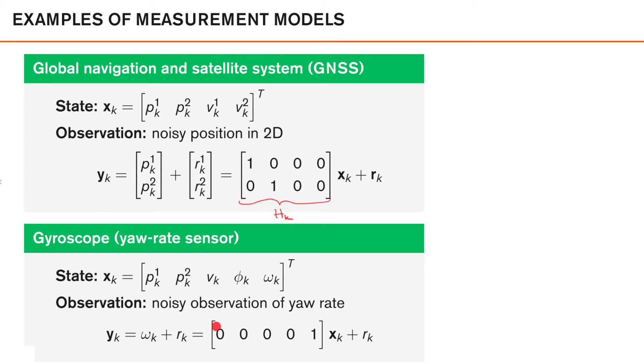So we can model this observation as the yaw rate, omega k, plus some noise. Again, the first part here is a linear function of our state, plus some noise. Now, the noise term here should typically describe the amount of thermal noise that you can expect in your sensor.